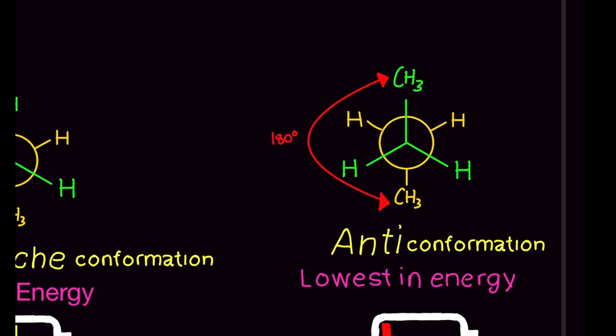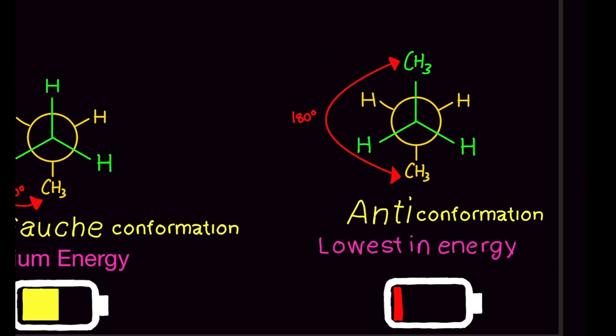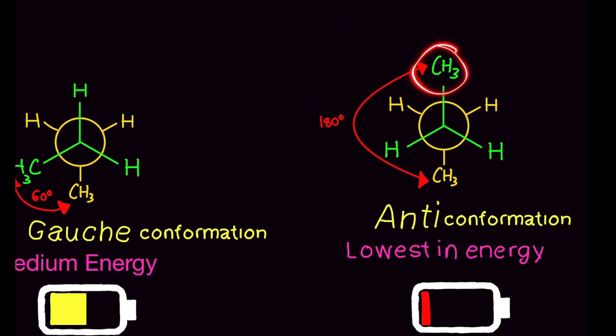The most stable are anti conformations. This is when the big functional groups like methyls, ethyls, oxygens, and nitrogens are 180 degrees away from each other, on opposite ends of the Newman projection. This is the lowest energy state and the most stable, because they're too far away from each other to be interacting or repelling each other.